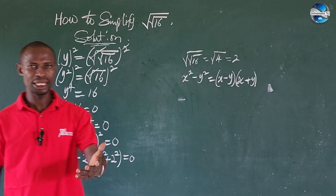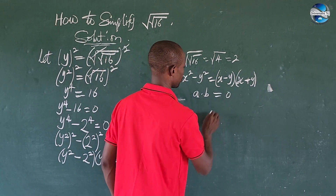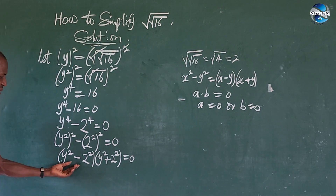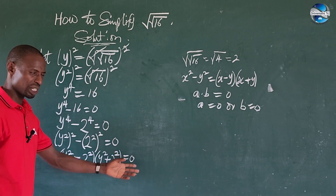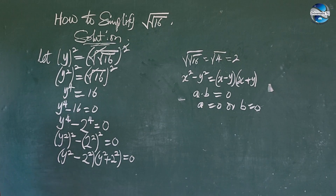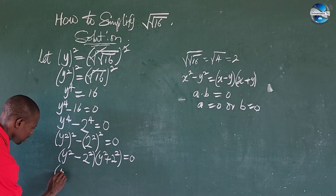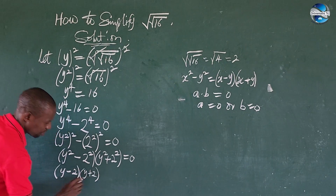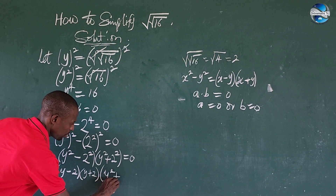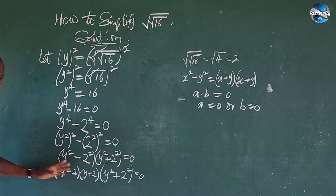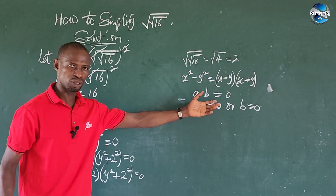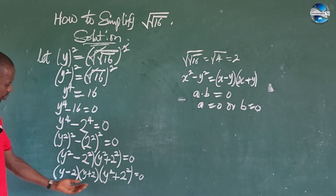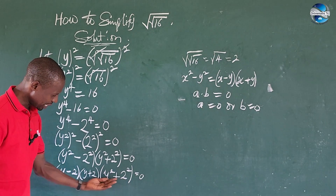We apply the zero product rule: if a times b equals zero, then a equals zero or b equals zero. We also have the difference of two squares again in the first factor, so we can break it down further to give us (y minus 2)(y plus 2)(y² plus 2²) equals zero. We are done with the first two factors.